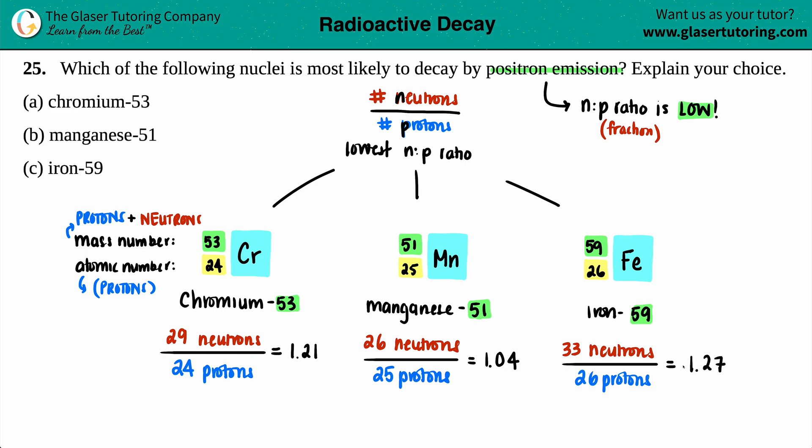Okay, I think we found it. Positron emission is always when that n to p ratio is low. You got to bring it up, and this guy, this is roughly a one-to-one relationship. That's way too low. So which of the following is most likely to decay by positron emission? It is our manganese. It's got way too low of a n to p ratio. And that's it.